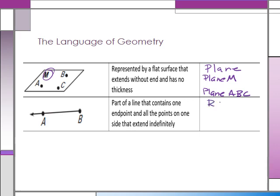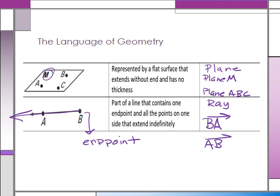Last we have a ray. A ray is a part of a line that contains an endpoint and then all of the points on one side that extends indefinitely. Here's my endpoint, and it's the part of the line that goes through point A. When you name it, you start with the endpoint — so ray BA is the name of this ray. Ray AB is a totally different ray; it starts with A and goes through B, and we don't switch the arrow side.